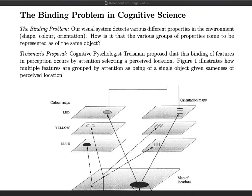Based on the signals that our retinas are picking up, our visual system is able to detect various different properties all around us — different kinds of colors and shapes. The binding problem is: how is it that various groups of properties come to be represented as of the same object? In our conscious experience, we don't just experience many different properties hanging around; rather, we experience actual objects, which involve many different properties connected into a bundle.